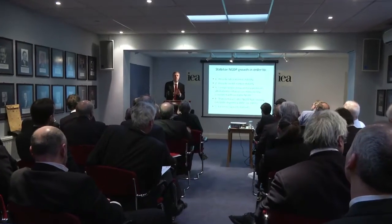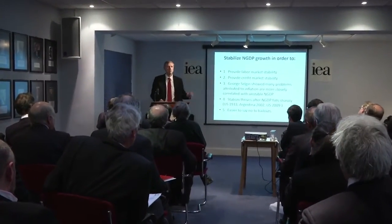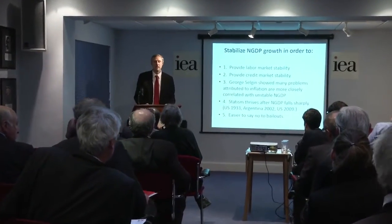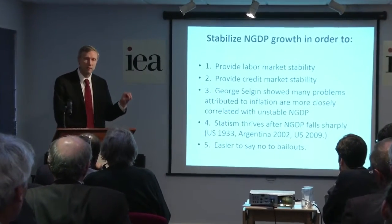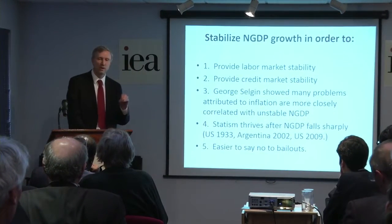If nominal GDP targeting had been used in the run-up to the financial crisis, would the boom have been moderated? If the central bank is targeting inflation, there's a problem when you have either rapid productivity growth or reduction in goods prices due to cheaper imports from Asia. Either of those factors will artificially hold down inflation, and then the central bank, by targeting inflation, adopts a more expansionary monetary policy — causing real growth to rise and the economy to overheat.